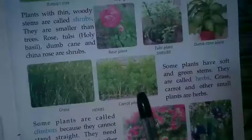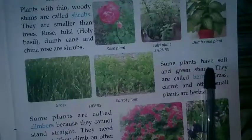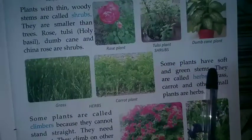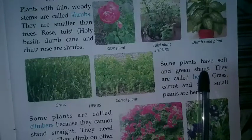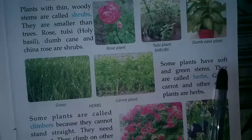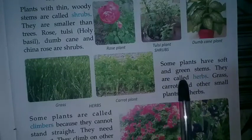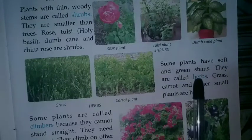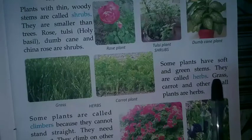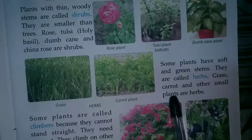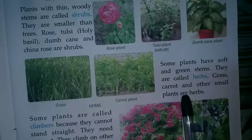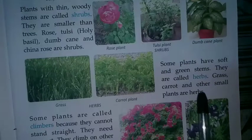Some plants have soft and green stems. They are called herbs. Grass, carrots and other small plants are herbs.